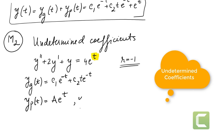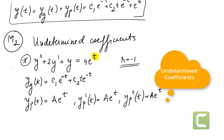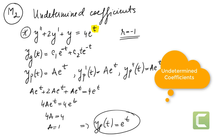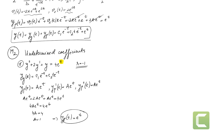Computing the derivatives: y_p' = A·e^t and y_p'' = A·e^t. Substituting into the equation: A·e^t + 2A·e^t + A·e^t = 4e^t, which gives 4A·e^t = 4e^t, so 4A = 4 and A = 1. The particular solution is y_p = e^t, the same result we obtained using variation of parameters.